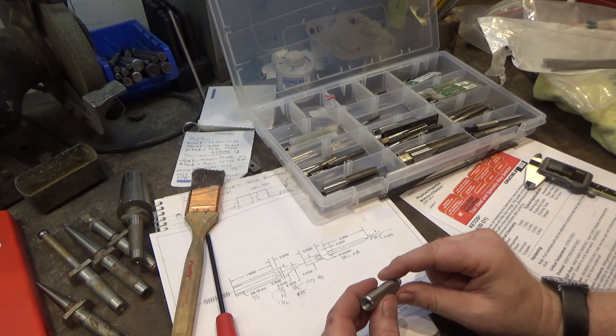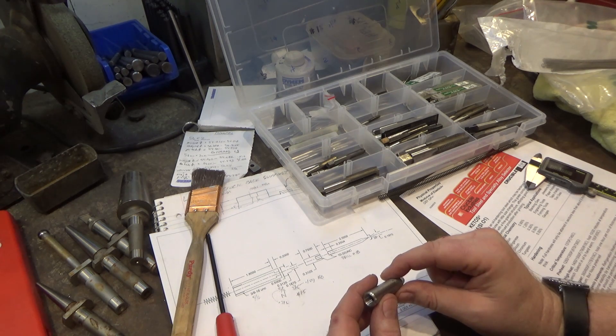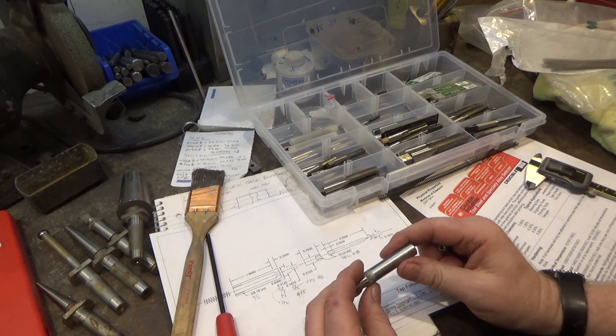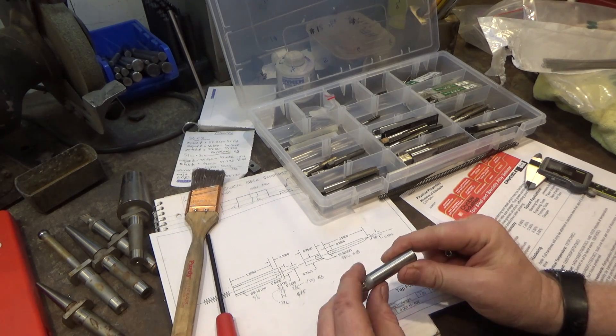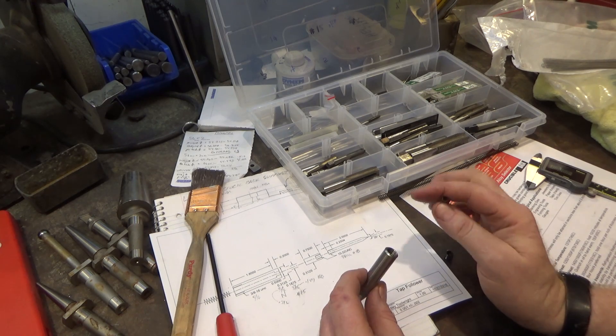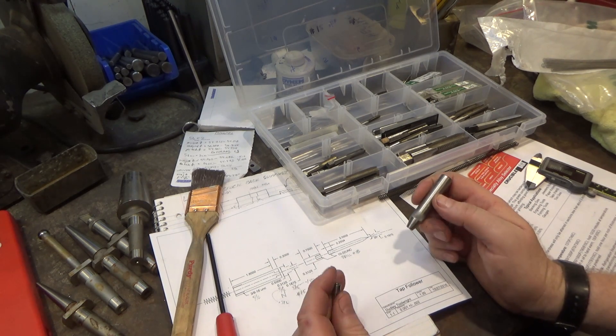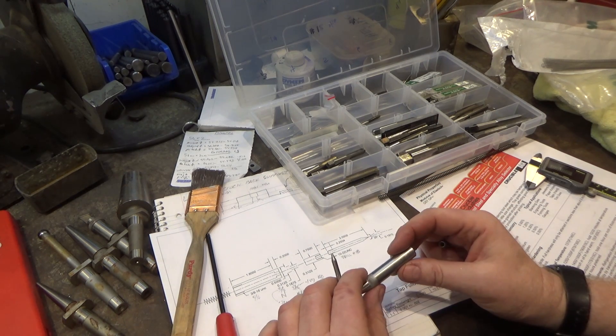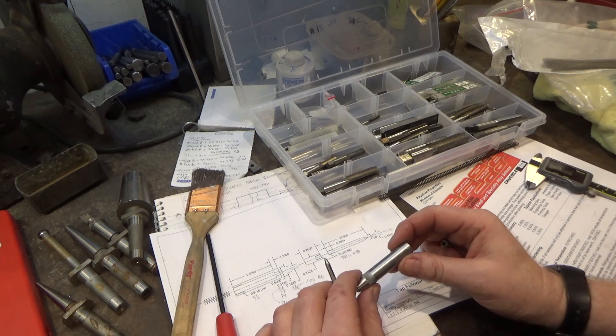Also, second time around I switched to stainless steel for the main shaft. 403 I think it is. 603? I can't remember. Numbers are terrible in my head. But anyways, this is easy machining stainless steel. And it made it easier to drill through significantly than the tool steel, the A2 that I was using the first time around.